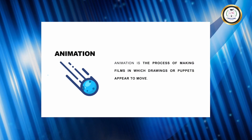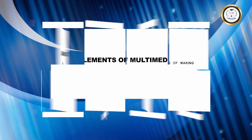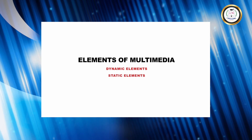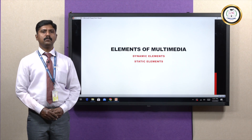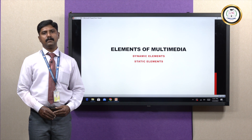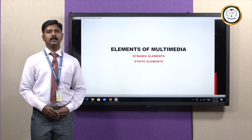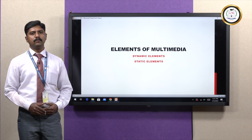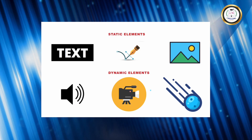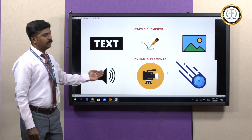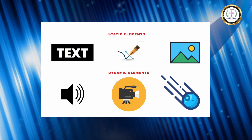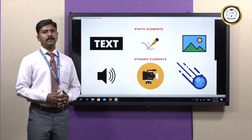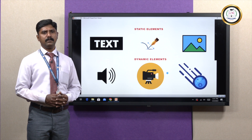These elements can be categorized into two types: dynamic and static. Anything which has movement is dynamic; anything which does not have movement is static. Under static, we can segregate the elements as text, graphics, and image. These three elements do not have any movement in them.